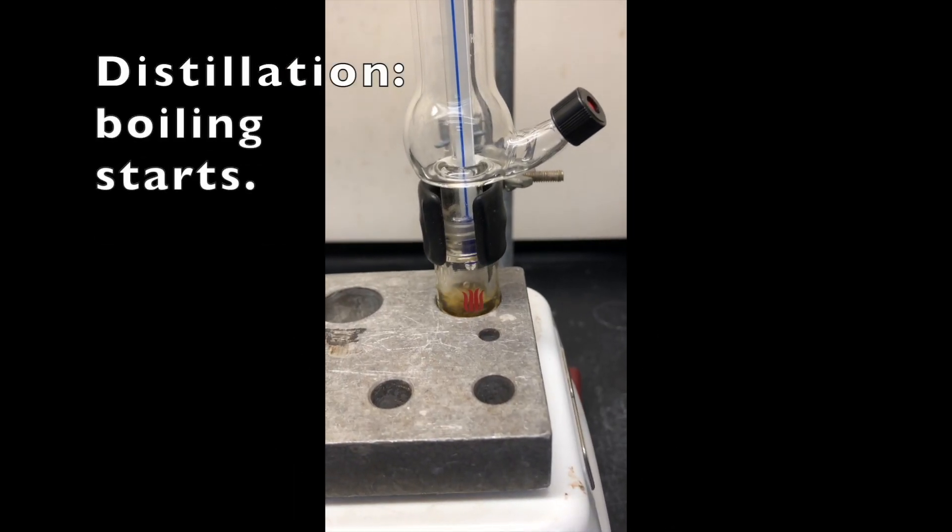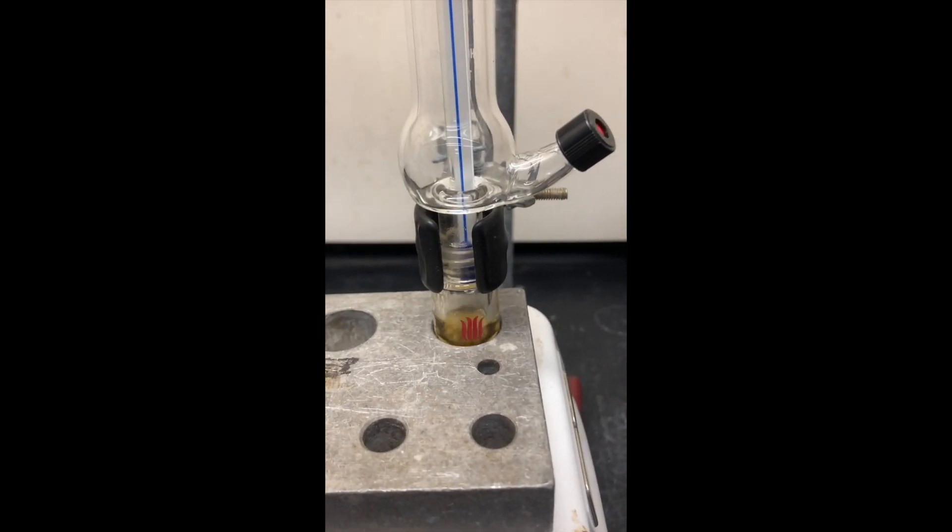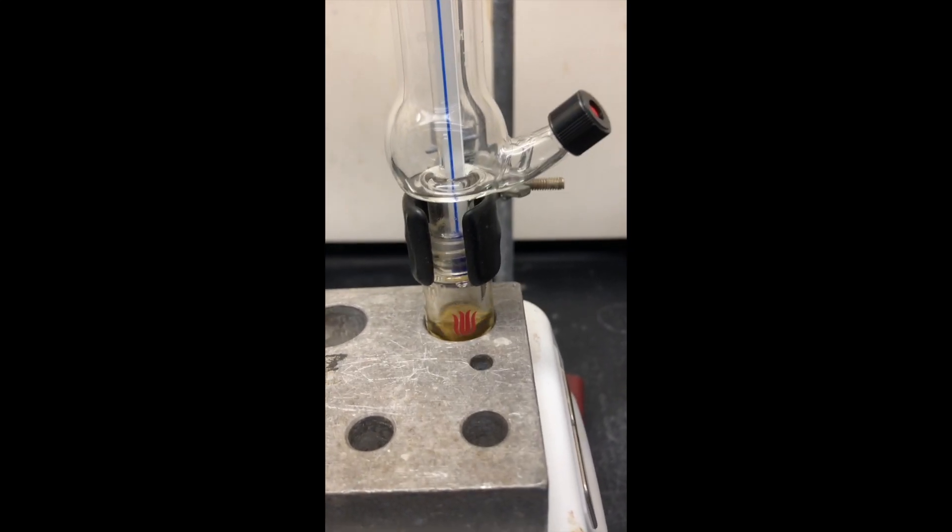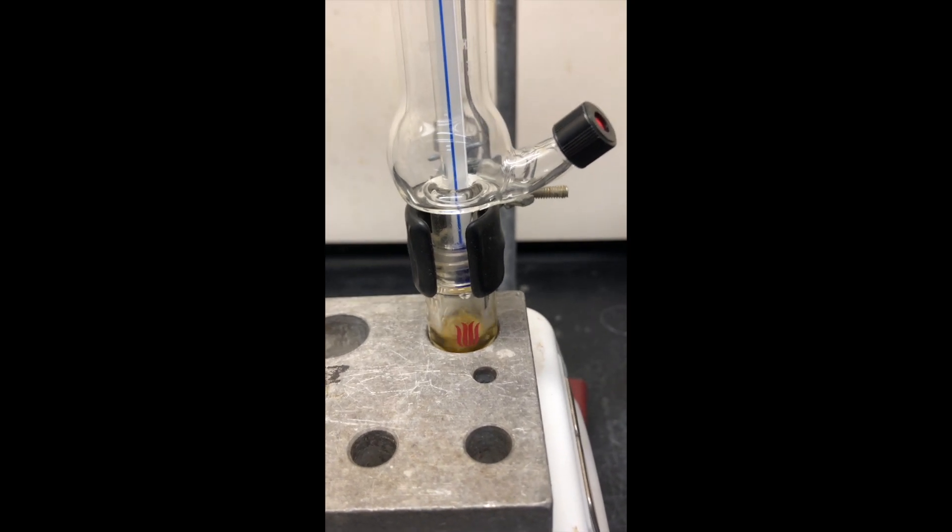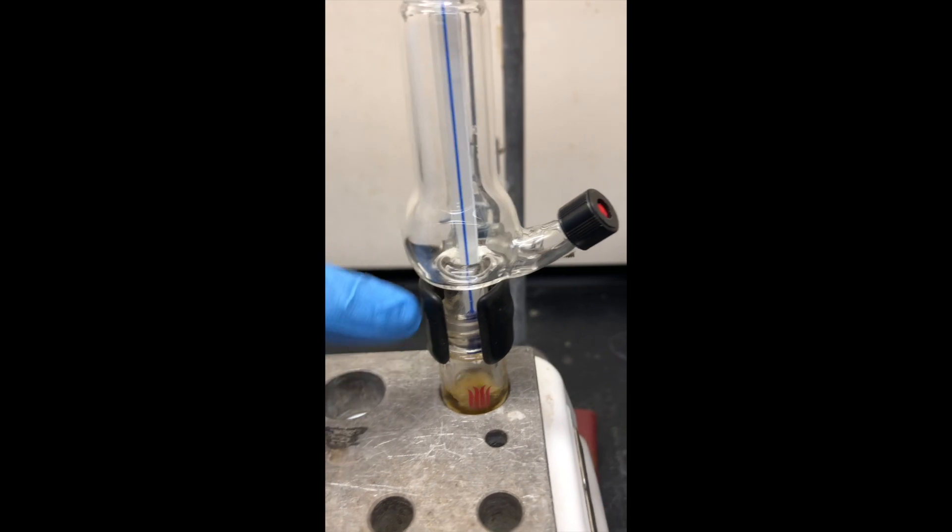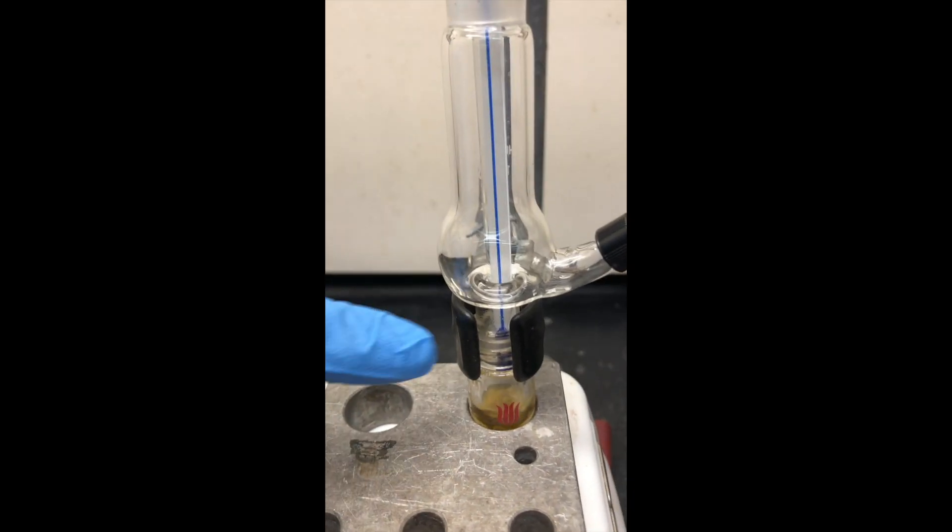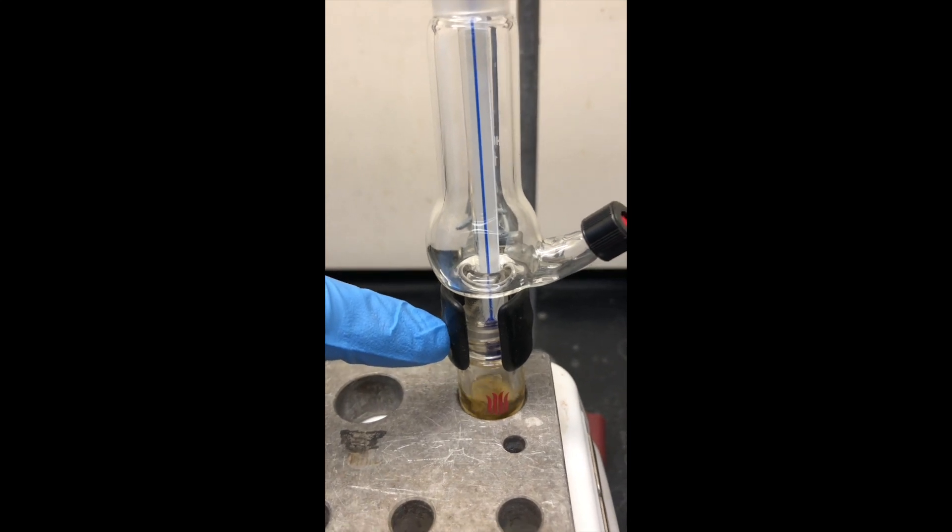So we've started boiling after about 10 to 15 minutes of heating, got a nice steady boil but it's not refluxing yet. There's not much in the way of vapor making it up into here. Eventually the vapor will make its way up into the upper section. But for right now, the vapor really hasn't made it much past the thermometer bulb at the bottom.